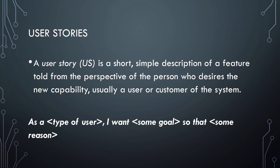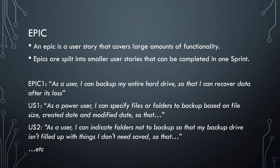A key ingredient of the Scrum pipeline is user stories. A user story is a brief description of a feature, normally told from the perspective of the person who would like to have it. A user story contains the type of user, what this user wants, and why the user wants it. Scrum also knows something called an epic — a user story that is generally more high level and contains larger amounts of functionality. Epics should be split up into smaller user stories that can be completed in a single iteration, also called a sprint.